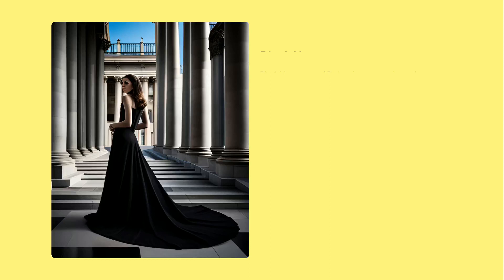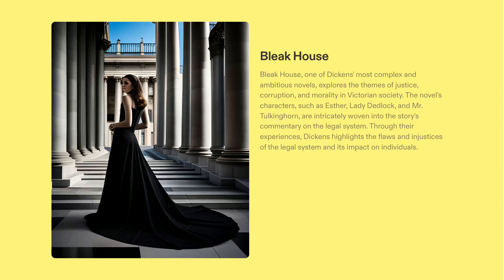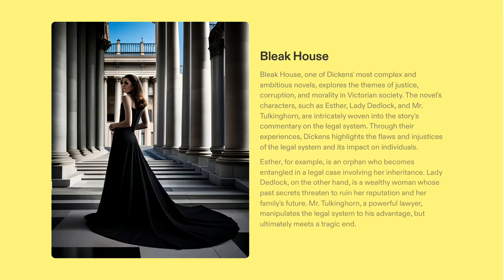Bleak House is a testament to Charles Dickens' ability to craft complex characters and stories. Through this novel, Dickens provides an insightful commentary on the justice system and the impact of inequality on a person. The novel's characters and plot provide a vivid portrait of Victorian England and how the law affects those living within it. Readers are presented with an intricate look into the Victorian justice system, as Dickens examines the themes of justice, corruption, and morality through the eyes of various characters, drawing attention to the flaws of the legal system and its impact on individuals. We see this notably through the character of Esther, an orphan entangled in a legal case, and Lady Deadlock, whose secrets could ruin her reputation. Dickens also highlights the dangers of power and the law through Mr. Tulkinghorne, a powerful lawyer who meets a tragic end, creating a vivid portrait of Victorian England and the injustices that take place in it.